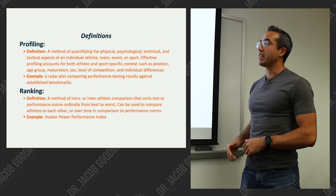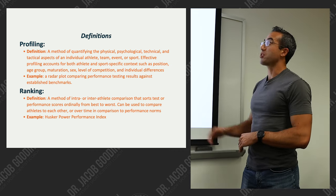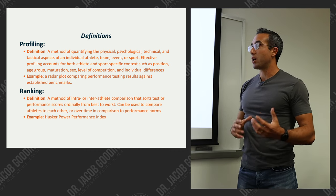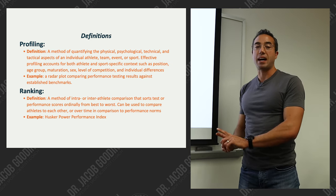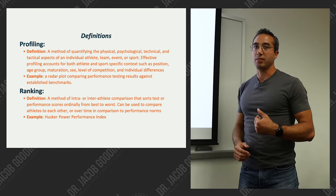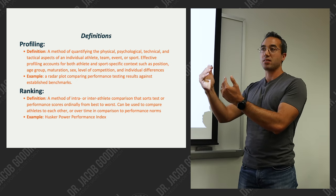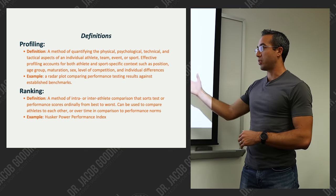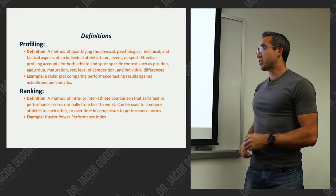As an example of a way to visually display an athlete's profile, we could show a radar plot comparing performance testing results against established benchmarks. We need those benchmarks before we create the profile, or else we have no real idea of whether the profile is good or bad. Ranking is another way of comparing athletes or quantifying their effectiveness in different categories. It's a method of intra or inter-athlete comparison, so you can compare an athlete against other athletes or that athlete to themselves over time.